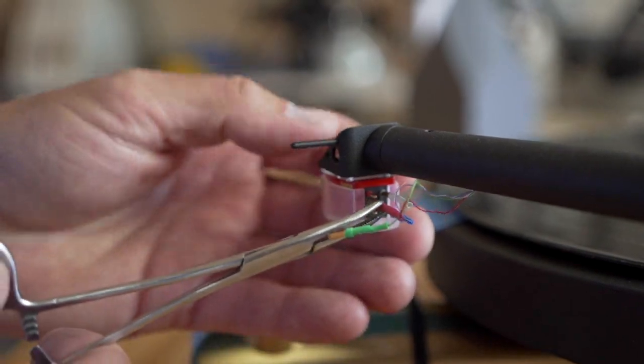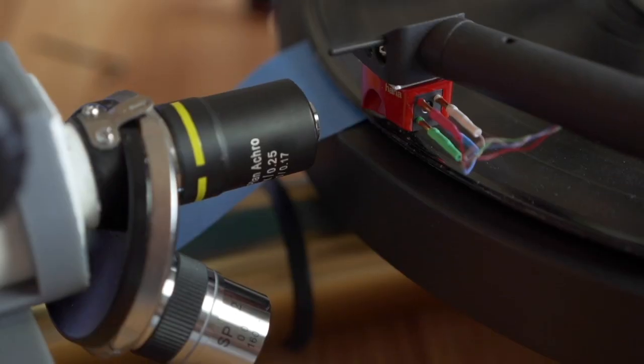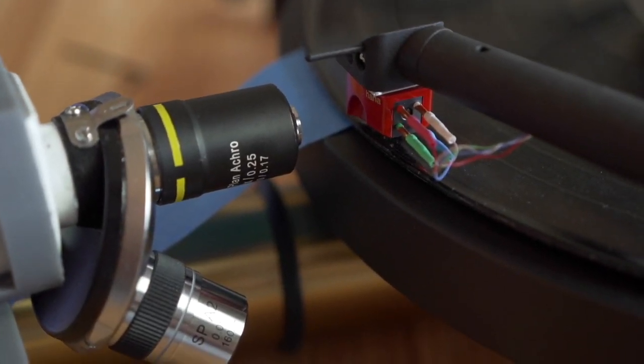So next step, reinstall the cartridge anywhere in the head shell. Recheck your VTF. And set up your USB scope or preferably your WALL-E scope and measure your dynamic rake angle.